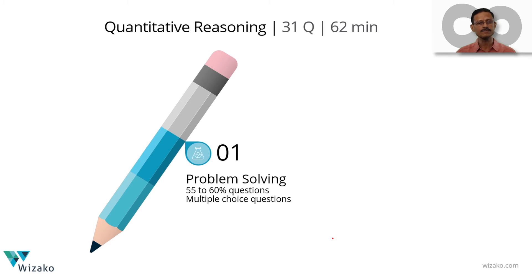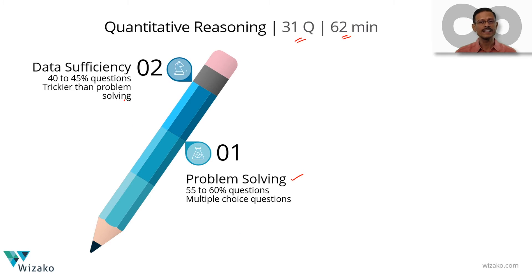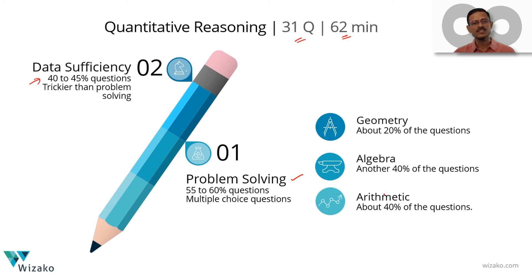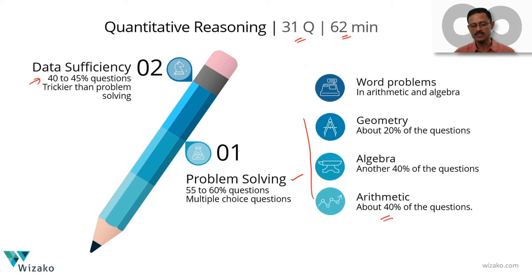The Quantitative Reasoning section has 31 questions in 62 minutes, presented in two variants. The first is problem solving — 55 to 60 percent of questions are of this kind. These are plain vanilla multiple choice questions with five answer choices, only one correct. The second variant is data sufficiency, about 40 to 45 percent of the 31 questions. Trickier than problem solving, you must determine from two given statements whether the data is sufficient to answer the question asked. Topics covered are arithmetic (40%), algebra (40%), and geometry (20%), including word problems from arithmetic and algebra.